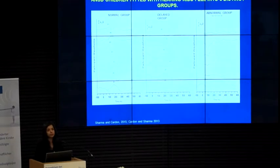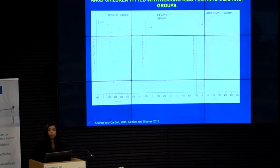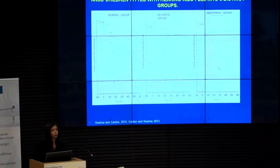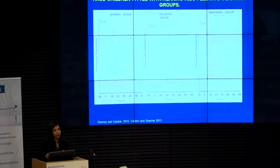We looked at children with ANSD who were fitted with hearing aids, and found they fell into three distinct groups: children with normal development and normal P1s, children with delayed development, and children who had completely abnormal cortical responses — we could not find any response at all. This is a very good clinical way to think about the severity of the disorder. Children with normal P1s reflect a mild level of dyssynchrony; delayed P1s reflect a more moderate level; and completely abnormal P1s reflect a very severe level of dyssynchrony. This is a better way of thinking about intervention than just looking at the audiogram in children with ANSD.